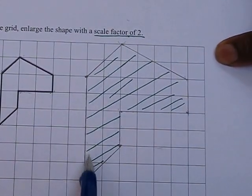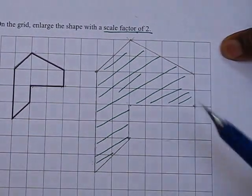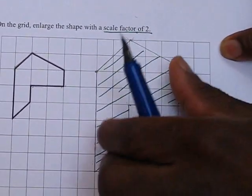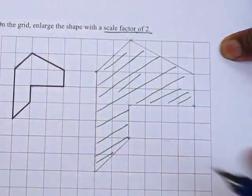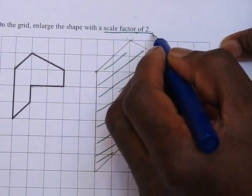One, two, three, four, five, six and that was three. And likewise here, as I said before, it doesn't matter where you put the shape as long as it's twice as big or the lengths are twice as big. And that's how you do a scale factor enlargement of two.